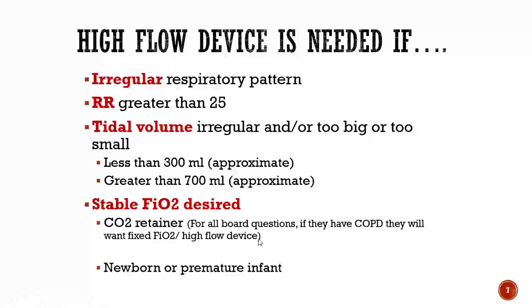Some indications for high flow include an irregular respiratory pattern, where you'd use 60 liters to ensure coverage. If your patient has a respiratory rate greater than or equal to 25, they will need a high flow device. Similarly, if the tidal volume is irregular — either too small or too large — you're going to be looking at a high flow device.